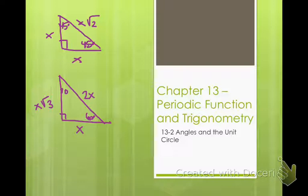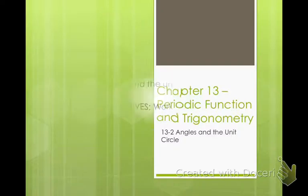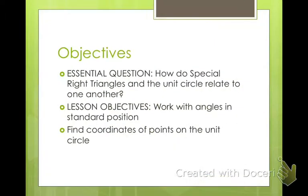So those will be important because we're going to use that knowledge in our unit circle. That's where we get a lot of information. Our objectives: we're going to answer the question, how do special right triangles and the unit circle relate to one another? We're going to work with angles in standard position and then find coordinate points on the unit circle.